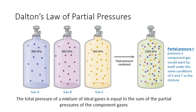At constant temperature and volume, each collision of a gas particle — whether it's particle A, particle B, or particle C — adds to the total measured pressure of 1,350 kilopascals in this particular case.